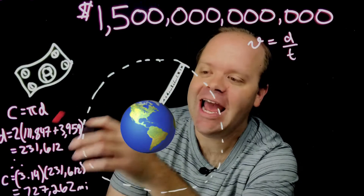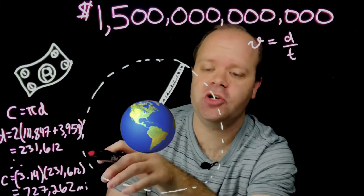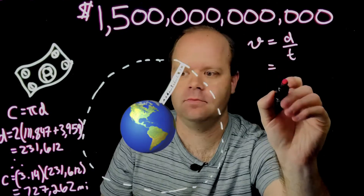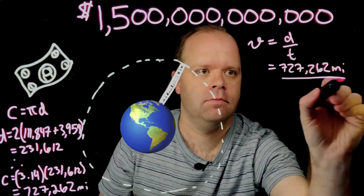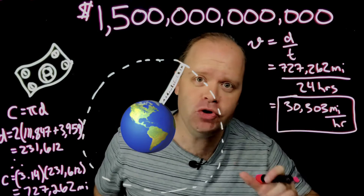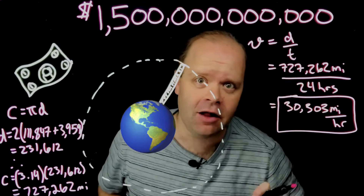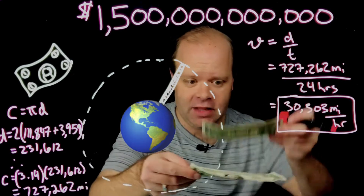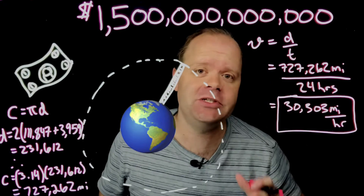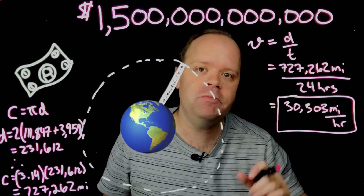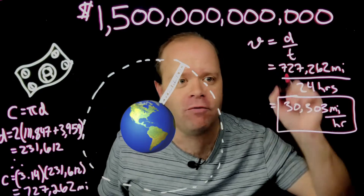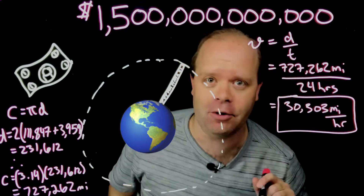Using the height of the debt tower and the radius of the earth, I can come up with a circumference — the distance that the money would have to travel in one rotation. This means that if you took $1.5 trillion and stacked it, you would have a tower extending out into space 47% of the distance to the moon, and the dollar bills at the tips would be traveling at over 30,000 miles per hour.